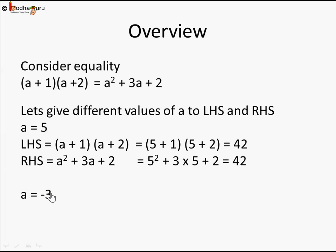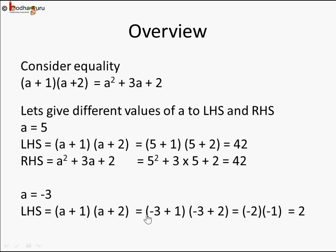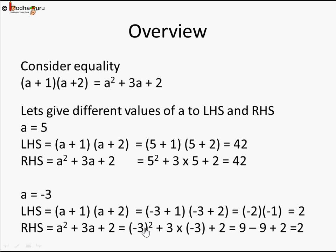Let's try a negative value: a = −3. On the left hand side, (−3 + 1)(−3 + 2) = (−2)(−1) = +2, since minus times minus is plus. On the right hand side, (−3)² + 3×(−3) + 2 = 9 − 9 + 2 = 2. So both left and right hand sides are again the same for a negative value.